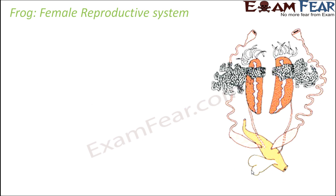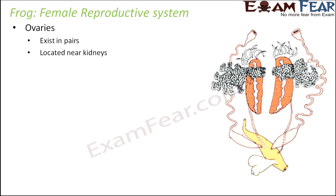Now let us talk about the female reproductive system. Females have ovaries which again exist in pairs and are located near the kidneys. They are the ones which produce the eggs. In the diagram you can see these structures are the ovaries, existing in pairs.